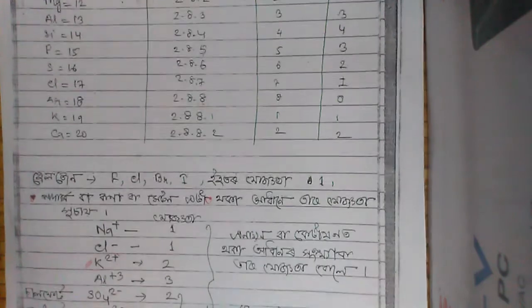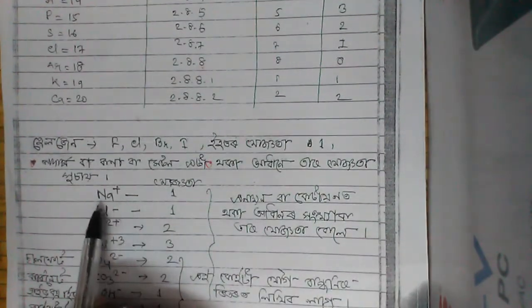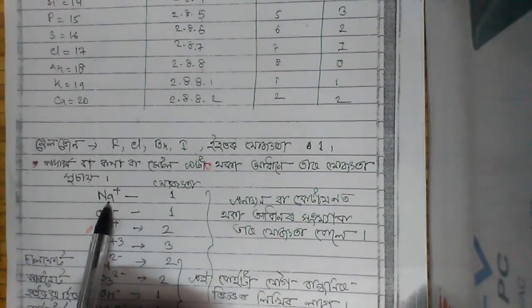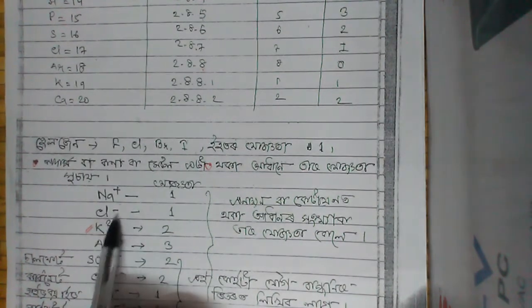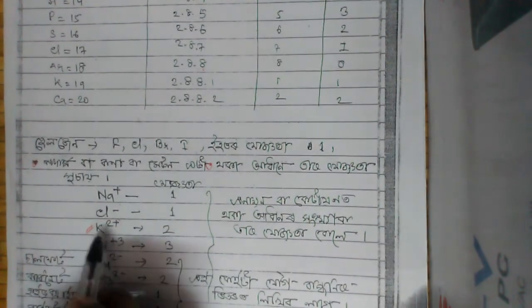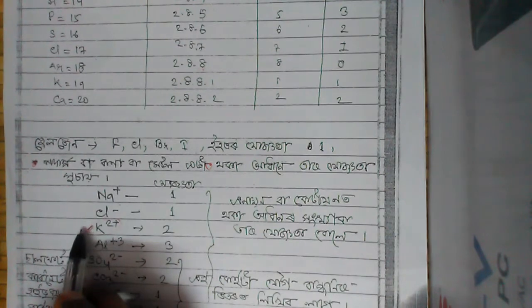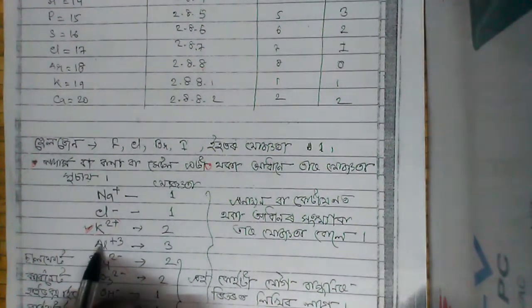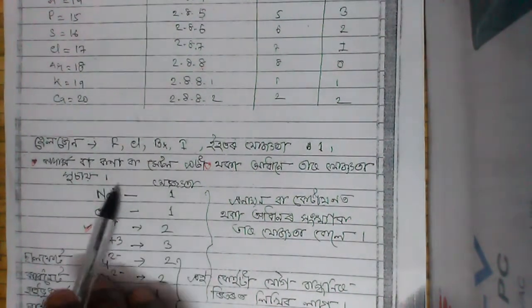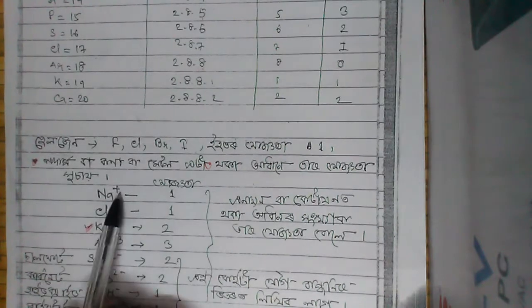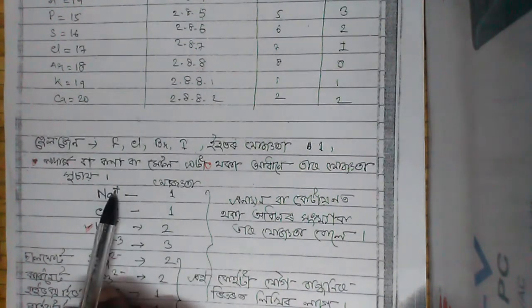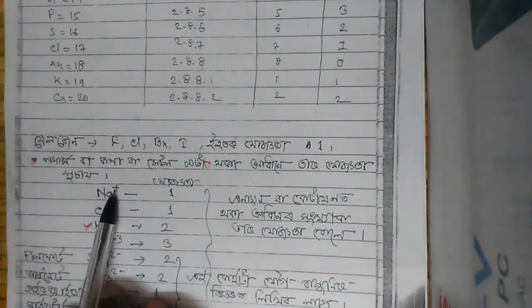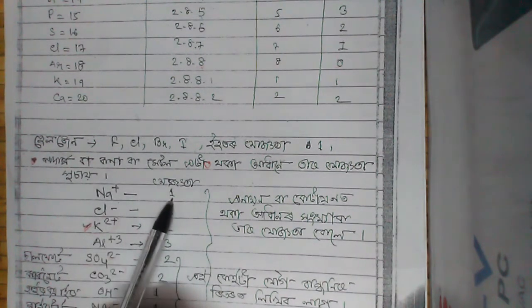We have to look at the question about ion: Na+, Cl-. It is K+. We have to look at K plus. At our point is Al3+. At this point we have to look at ion. We have to consider ion. So we have to look at sodium plus and 1.